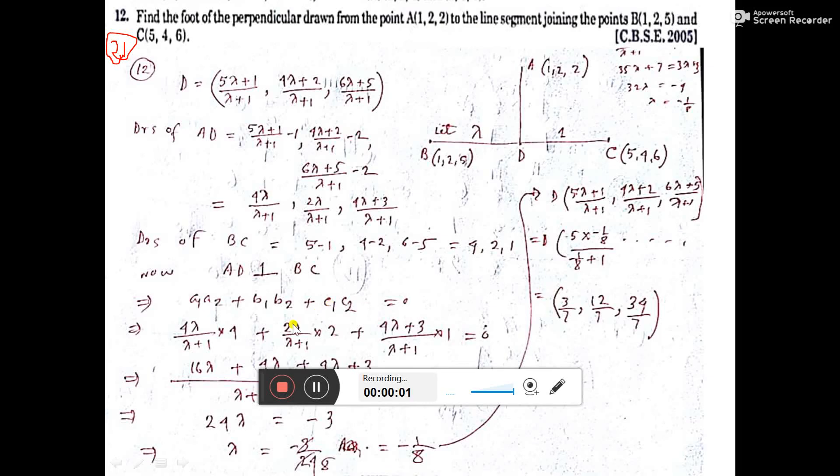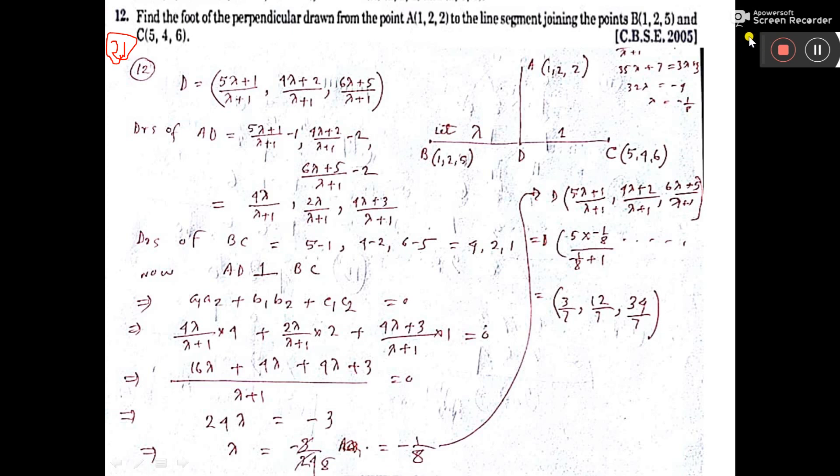This is number 21. Find the foot of the perpendicular. We have to find the foot of the perpendicular from the point this, so this is the point to the line segment joining the point this and this.